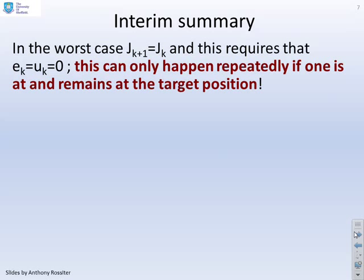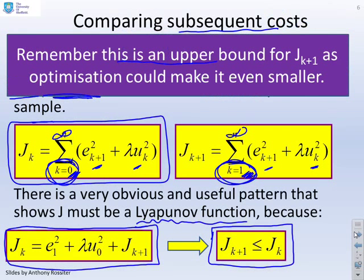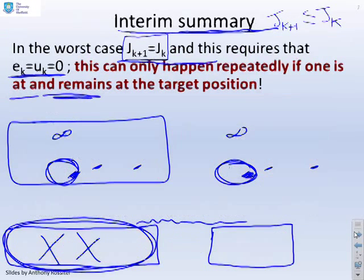So what we've got is an interim summary. In the worst case, J_{k+1} equals J_k, because you remember what we said was J_{k+1} is less than or equal to J_k. But in order for that to happen, we would have to have e equals u equals 0. If I go back to the previous page, and you look at this identity at the bottom, the only way these two can be the same is if there's no e term and no u term.